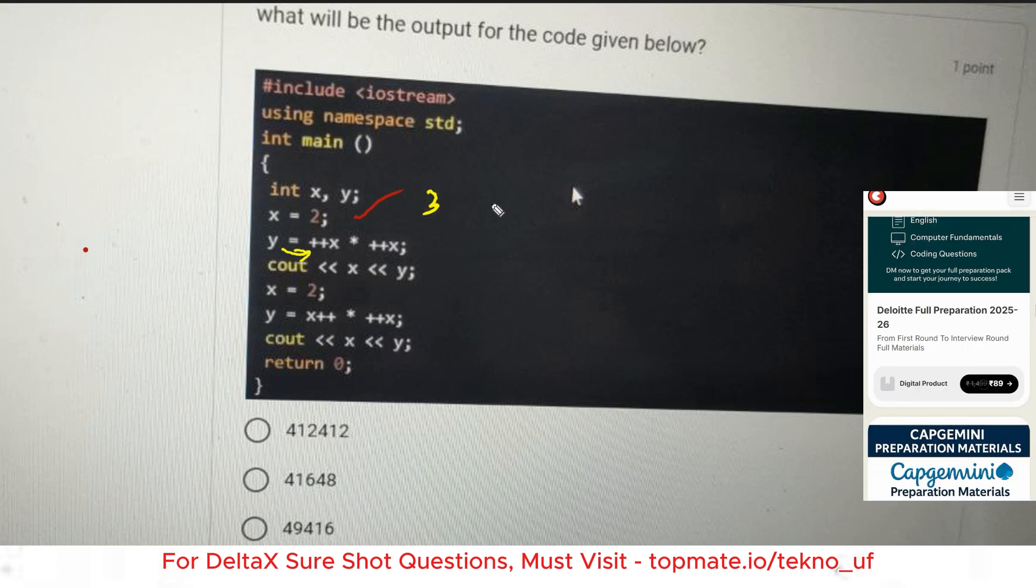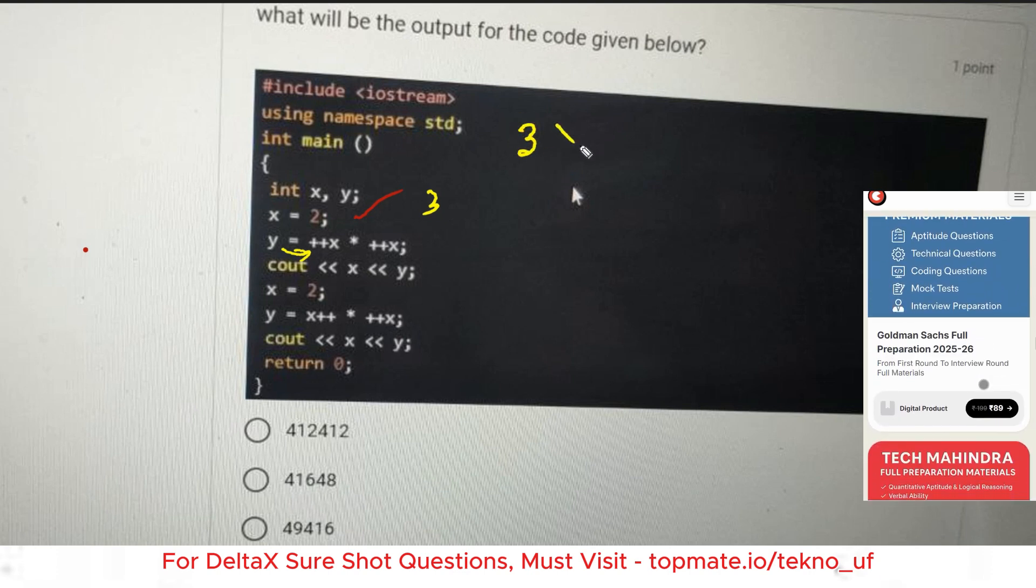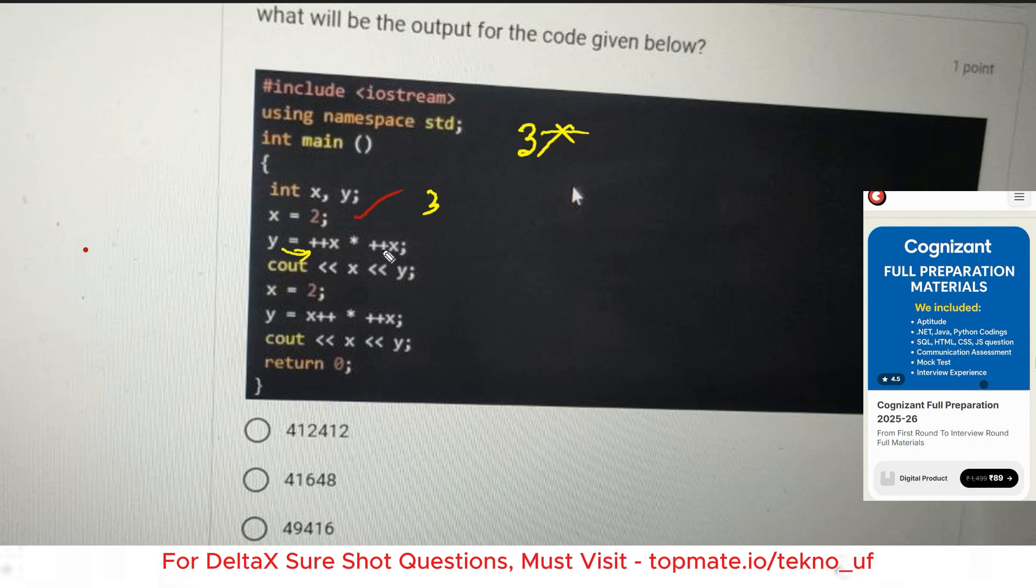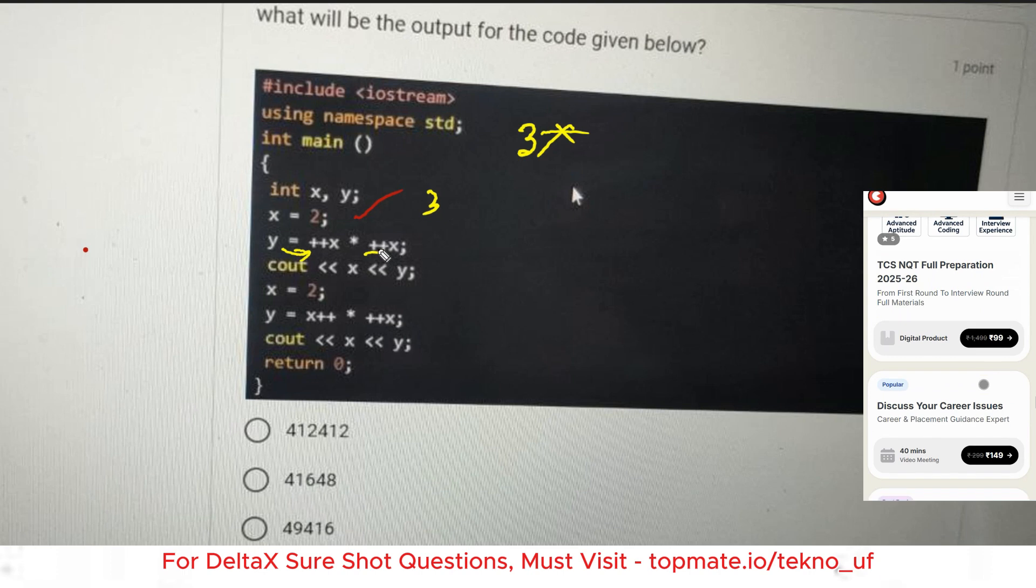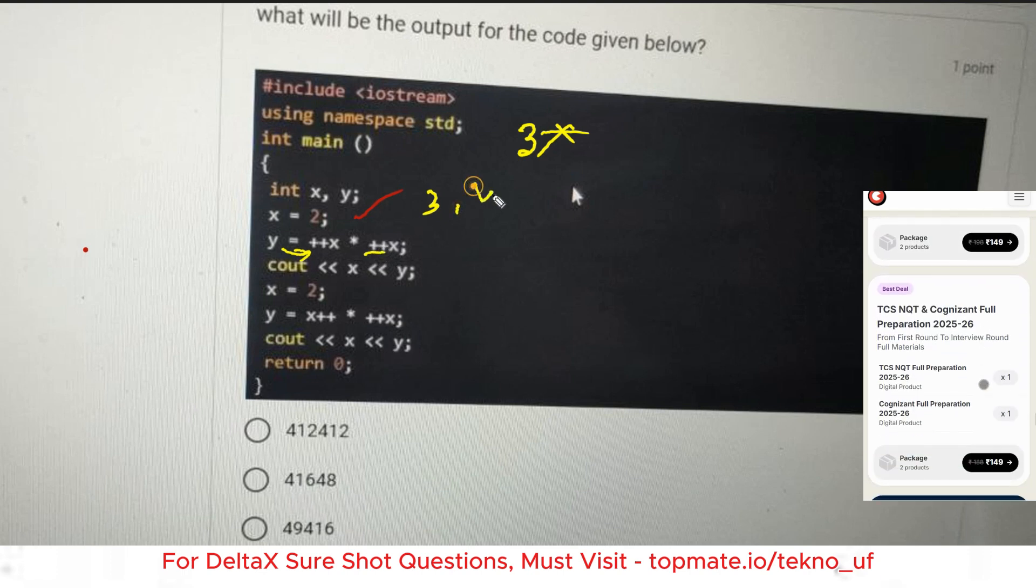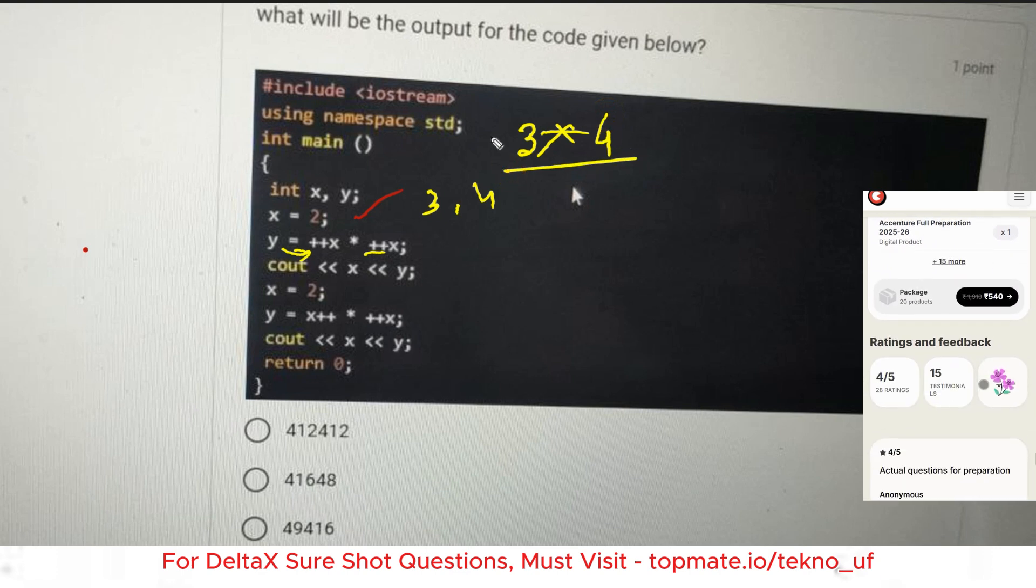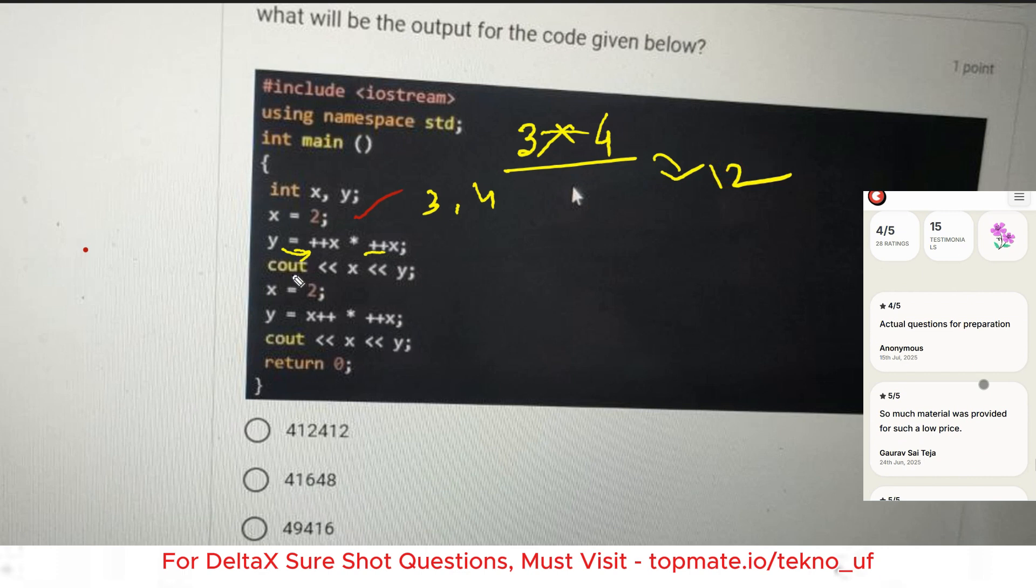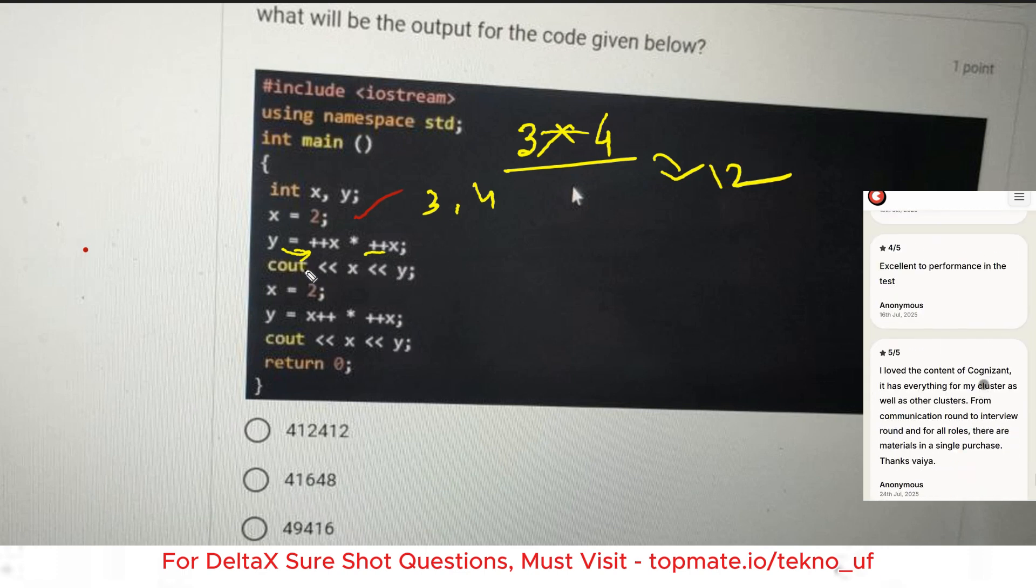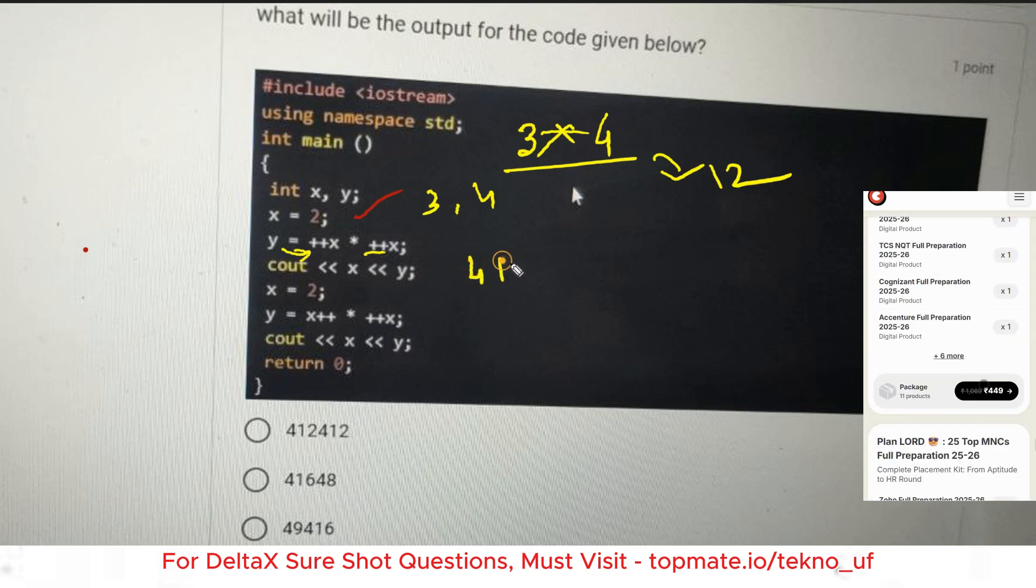The flow of program is coming from this side, so at first the value of x is incremented to 3, then the value is being kept as 3, then it is multiplying. Then again it is being incremented, 3 plus 1, that is 4, and the value is being multiplied with 4. 3 into 4 becomes 12.